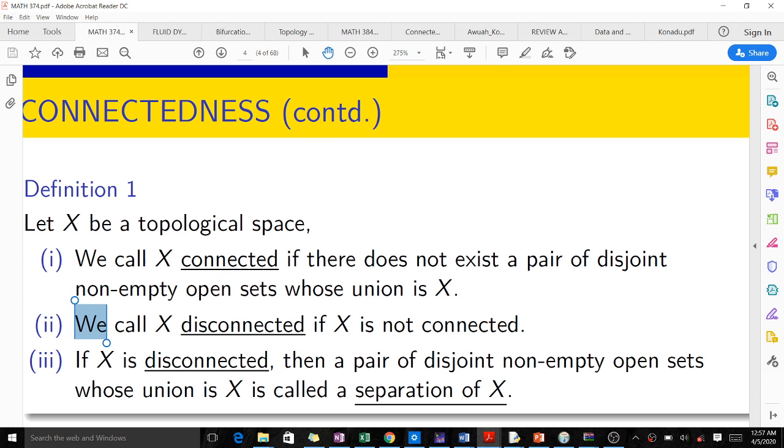So today we're going through connectedness and we would like to go through some definitions. Just a recap: in topology we have three important C's. The first C being continuity, which we've already looked at in topology one. The second C being connectedness, and the third C is compactness, which we'll talk about at a later part.